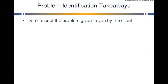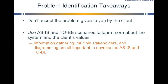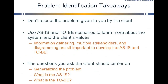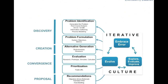Some takeaways from problem identification: Don't accept the problem as given to you by the client. Focus on asking questions that probe whether this is the real problem. Use the as-is and to-be scenarios to learn more about the system and the values of the client. Get information from multiple sources and from the perspectives of multiple stakeholders. Utilize diagramming as an important tool for the as-is and to-be scenarios. The questions you ask the client should center on: Is this really the problem? How does your current system work? And what are the characteristics of the ideal to-be scenario? The next video will focus on problem formulation, systems objectives, and metrics — another way of formulating a problem once you've identified what you think the problem is.